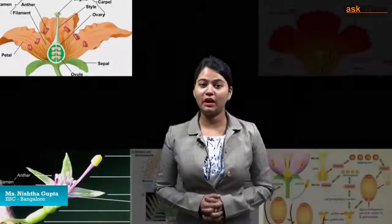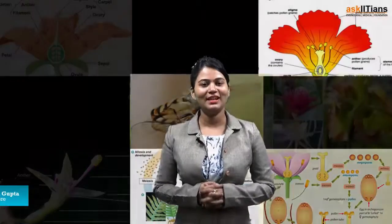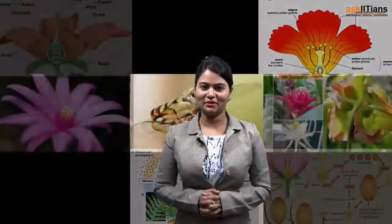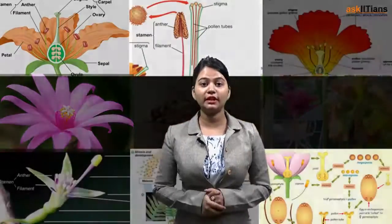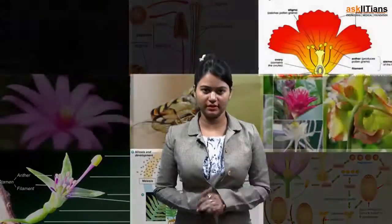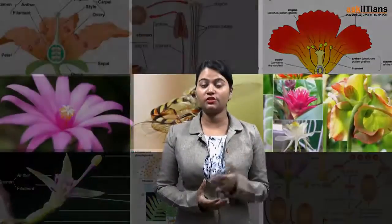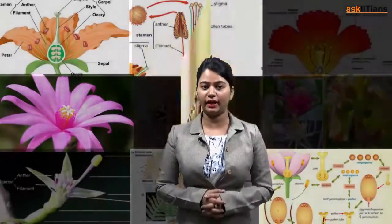Hey students, this is part 5 of the chapter Sexual Reproduction in Flowering Plants. In our previous lectures, we discussed about the anther — the structure of anther and the development of anther. In this part, we will see the development of male gametophyte, that is the male sex organ of the flowering plants.